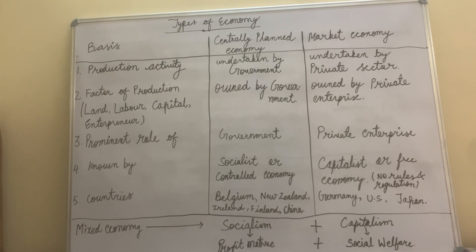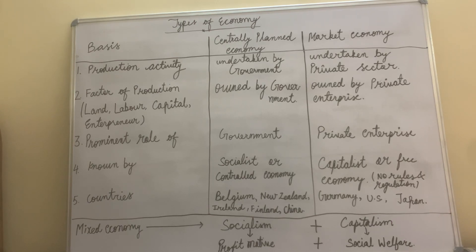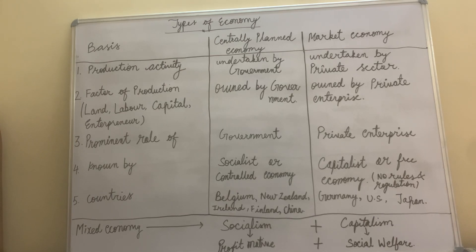In a centrally planned economy, the factors of production are owned by the government. The key basis points to note: production activity — government; factors of production — government. All of these come under government control. In a market economy, the factors of production are owned by private enterprise — land, labor, capital, and entrepreneur are all in the hands of the private enterprise.